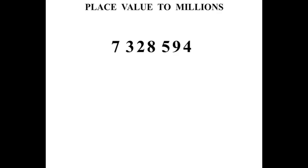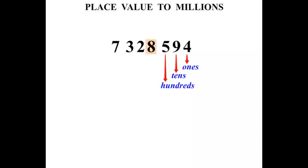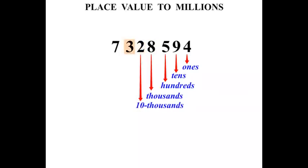This is a fairly large number — it's a 7-digit number. Each of the digits has a certain place value. Starting from the right, that 4 is in the 1's place, the 9 is in the 10's place, the 5 is in the 100's place, the 8 is in the 1's place, this 2 is in the 10's place, and the 3 is in the 100's place.